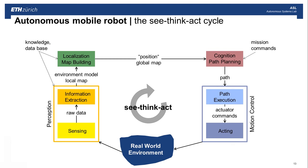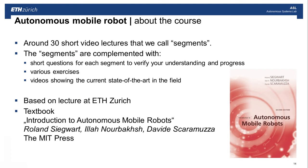This gives you a rough summary about the four elements important for the see-think-act cycle, which will be discussed throughout this course. This course is a collection of about 30 short video lectures called segments, complemented with short questionnaires for each segment to verify your understanding and progress. We will also give various exercises with more detail and complement it with videos showing the current state of the art. This lecture is based on courses given at ETH Zurich on autonomous mobile robots and on the textbook Introduction to Autonomous Mobile Robots, authored by Ilan Nourbakhsh, Davide Scaramuzza, and myself, published by MIT Press.